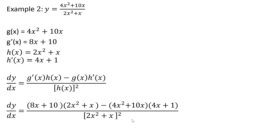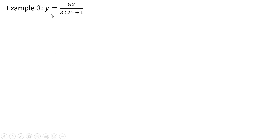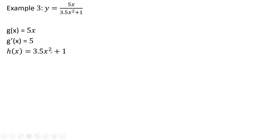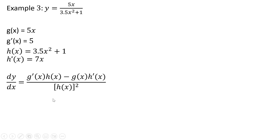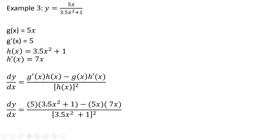Alright, let's move on to Example 3. g of x is 5x, and the derivative of that is just 5. The denominator is the h of x function, and the derivative of that is just 7x. Here's the rule, and making our appropriate substitutions we get the following result. I'm not going to simplify this any further.